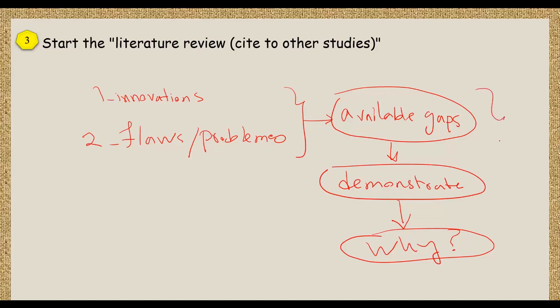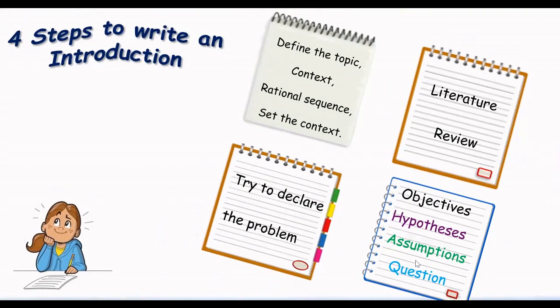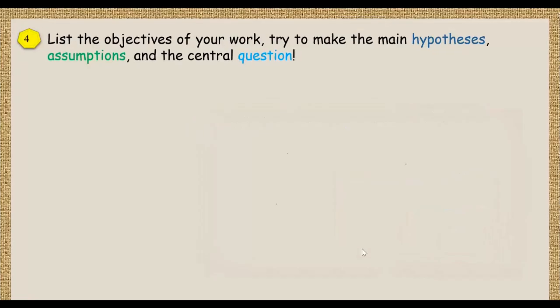By these three steps, you can answer, you can expect to answer the third step. For the fourth one, objectives, hypothesis, assumption, and question. You can try to list the objectives of your work and make hypothesis, assumption, and central question.